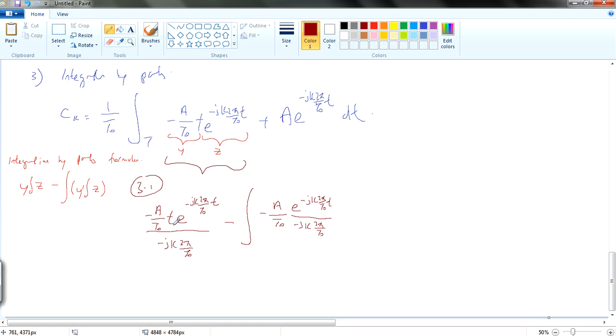This one is actually denominator. Maybe I just change all this. Let's put it out a little bit. And then, so we have minus jk 2π T0. And then let's integrate this portion.